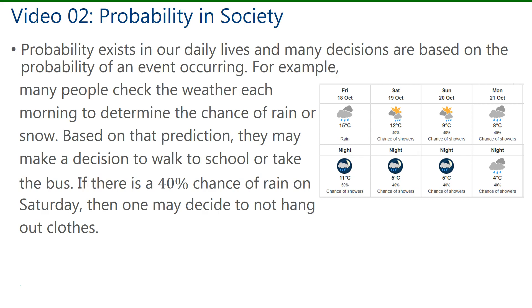For example, the weather. Many people check the weather every morning to determine if there's a chance of rain or snow, or if it'll be sunny, and then based on that prediction they make a decision. They may decide to walk to school or take the bus. If they see that there's a 40% chance of showers on Saturday, they may decide not to hang out clothes that day or not have a barbecue. So people constantly plan and make decisions based on probability.